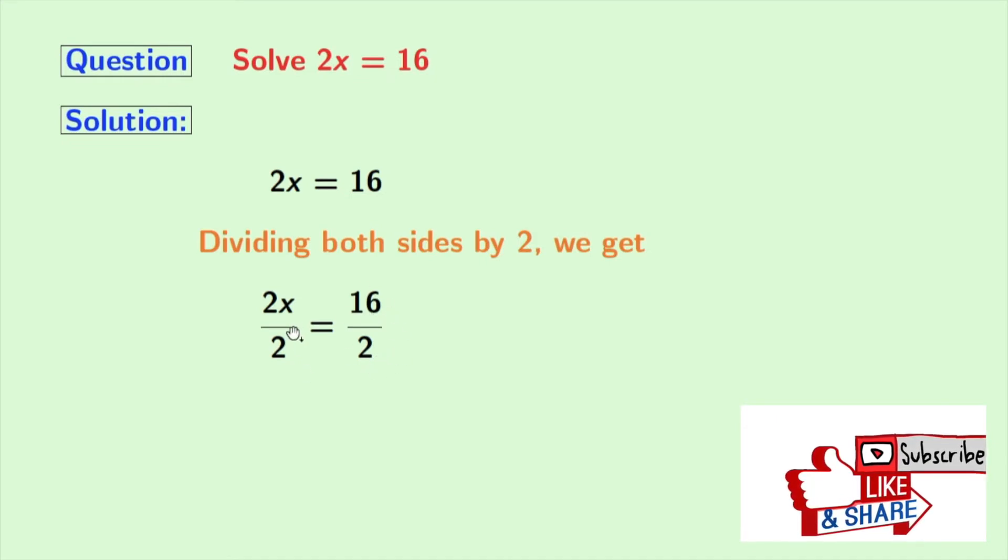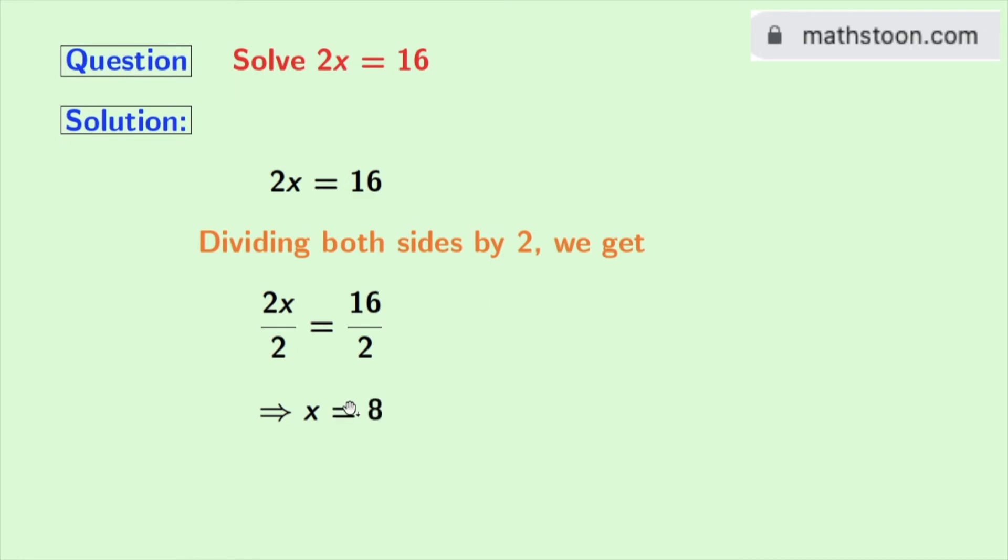Now on the left-hand side, 2 and 2 get cancelled and we are left with x. And on the right-hand side, 16 by 2 is equal to 8.